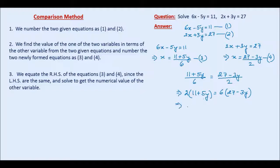And if we open the brackets, we get 22 plus 10y equal to 6 times 27 is, 6 times 7 is 42, carried over 4, 6 times 2 is 12 plus 4, 162 minus 18y.